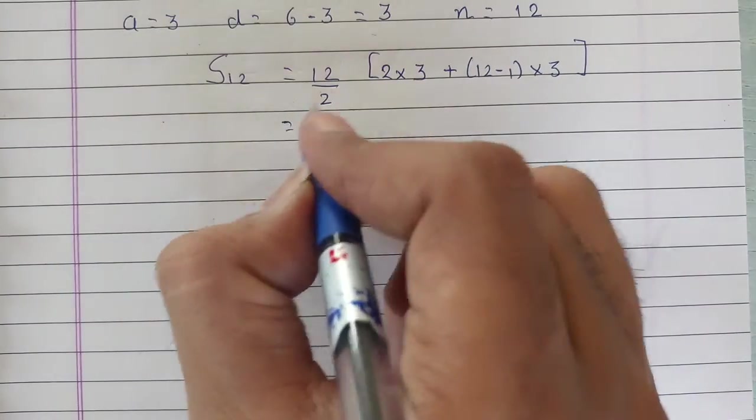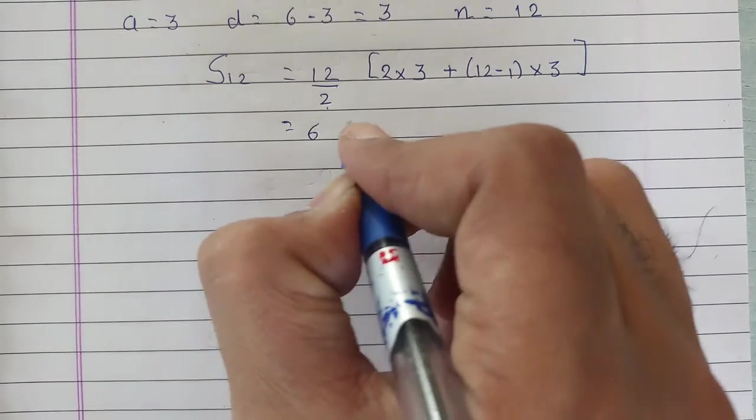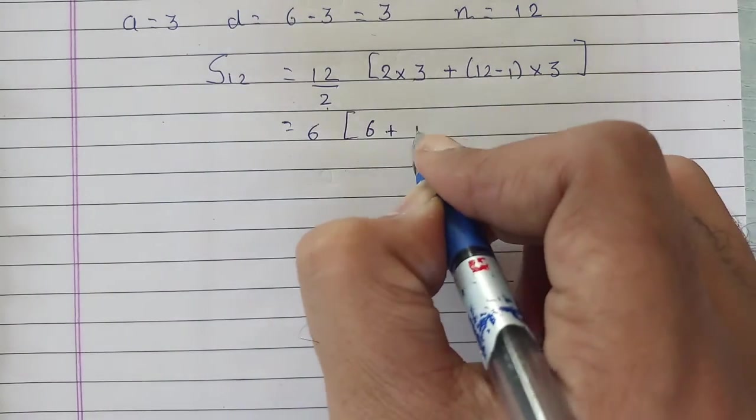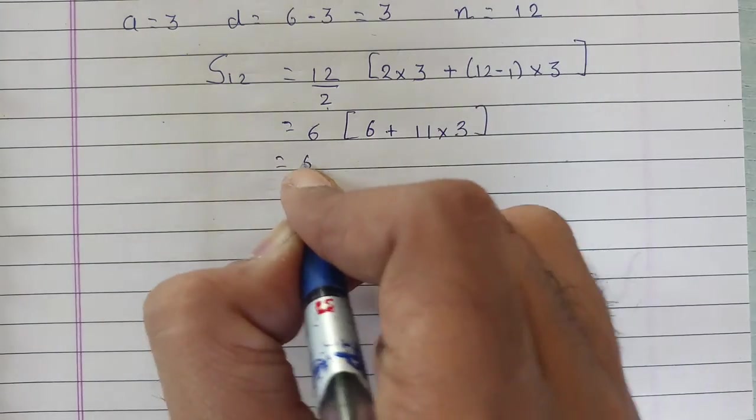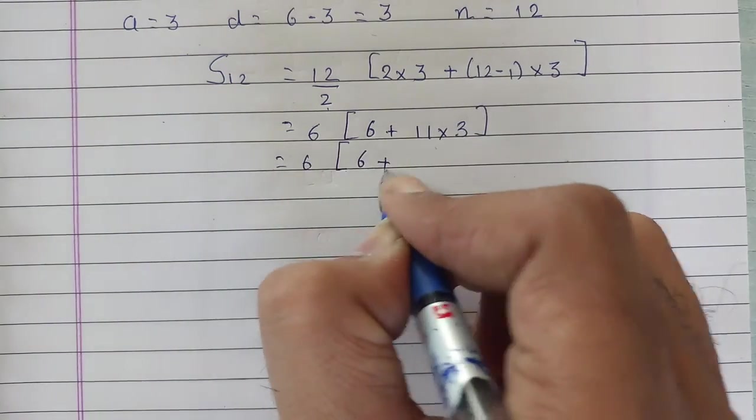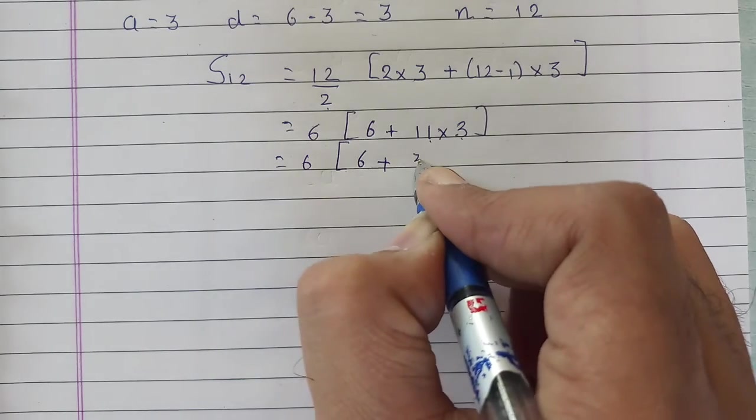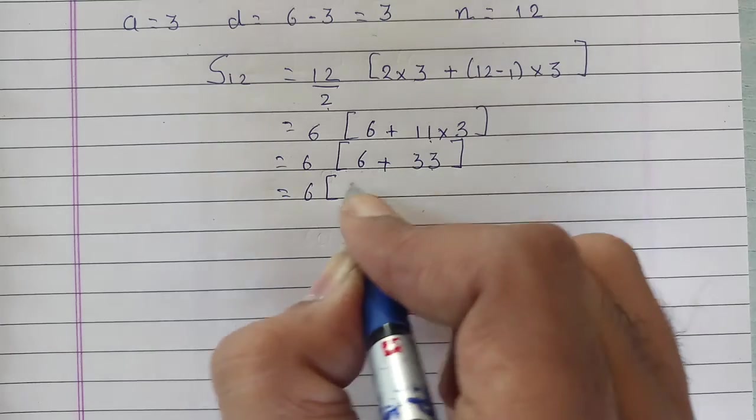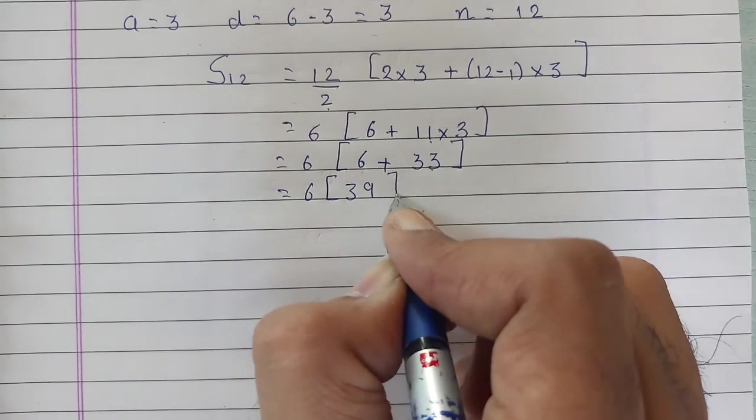From this, 12 divided by 2 is 6. 2 times 3 is 6. 12 minus 1 is 11, into 3. From this, 6 as it is, 6 plus 11 into 3, that will be 33. 6 into bracket 33 plus 6, that is equal to 39.